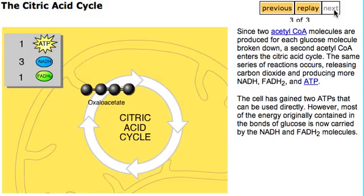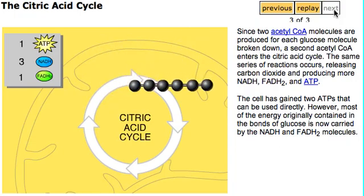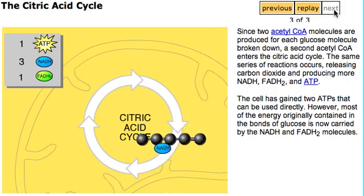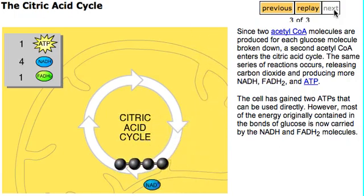Since two acetyl CoA molecules are produced for each glucose molecule broken down, a second acetyl CoA enters the citric acid cycle. The same series of reactions occurs, releasing carbon dioxide and producing more NADH, FADH2, and ATP.